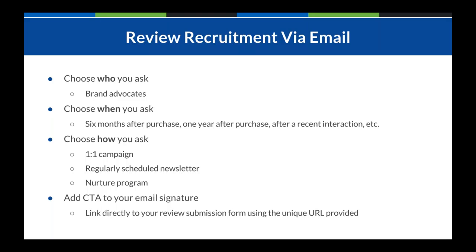An easy passive way to get reviews is adding a call-to-action to your email signature. You can link directly to the review submission form using the unique URL provided to that page, allowing users to skip over the homepage and go directly to filling out the review. This improves completion rates. Having it in your email signature means that anyone at your company who interacts with clients regularly increases the chances that those clients will stumble upon it and take time to leave their feedback.